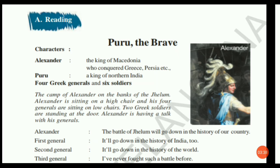The full name of Puru is Purushottam. Coming to the story, there are some characters given. Alexander is the first character — he is the king of Macedonia who conquered Greece, Persia, and others. Puru is the king of North India; his kingdom was the Paurava kingdom. There are also four Greek generals and six soldiers. These are all the characters involved in this text.